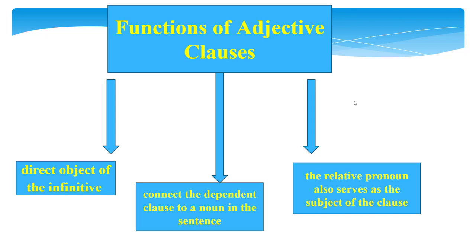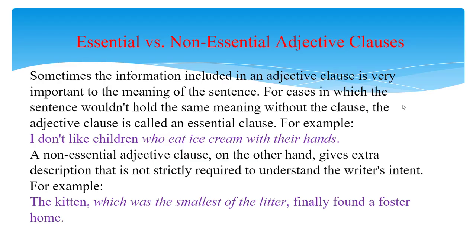Essential and non-essential adjective clauses: sometimes the information included in an adjective clause is very important to the meaning of the sentence. For cases in which the sentence wouldn't hold the same meaning without the clause, the adjective clause is called an essential clause. For example: 'I don't like children who eat ice cream with their hands.' The adjective clause gives essential information to describe the children. If you removed that clause, the sentence would simply say 'I don't like children,' which is very different. An essential adjective clause does not require any additional punctuation.